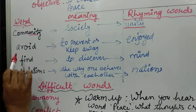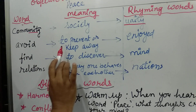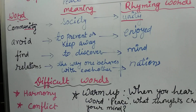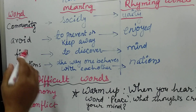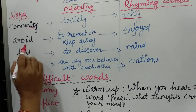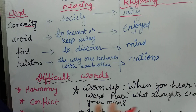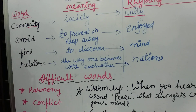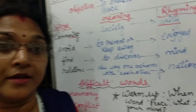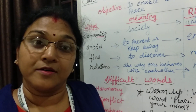The second word is avoid. Avoid means to prevent or to keep away from things. And the rhyming word of avoid can be joyed. So when I pronounce this word: avoid and joyed, avoid and joyed.